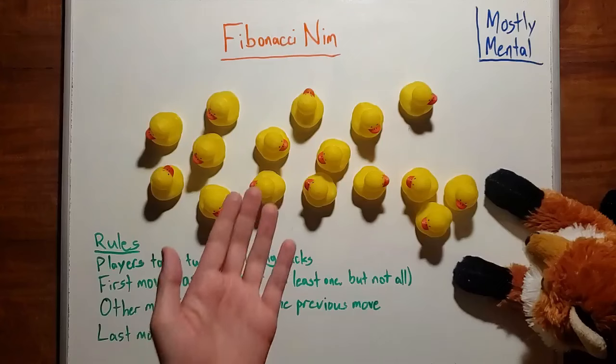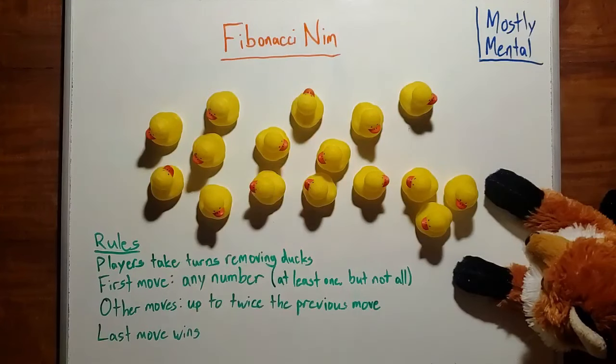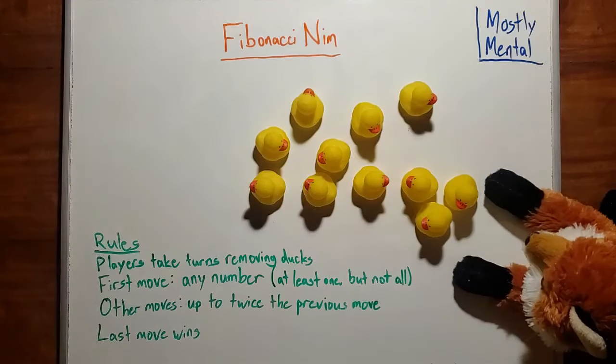As usual, we have a pile of ducks between us, in this case 16 of them, and we'll take turns removing them. The first player can take away any number of ducks, but not all of them since that would be a bit too unfair. So I might take away these 5.